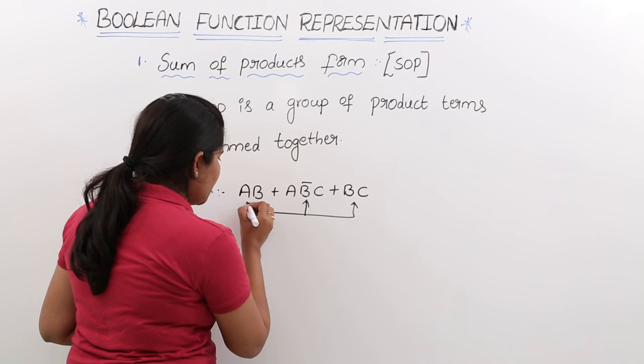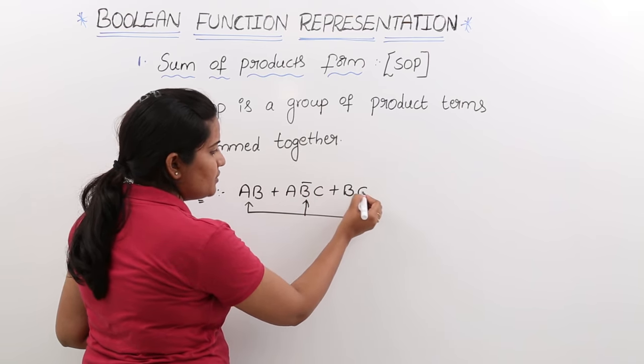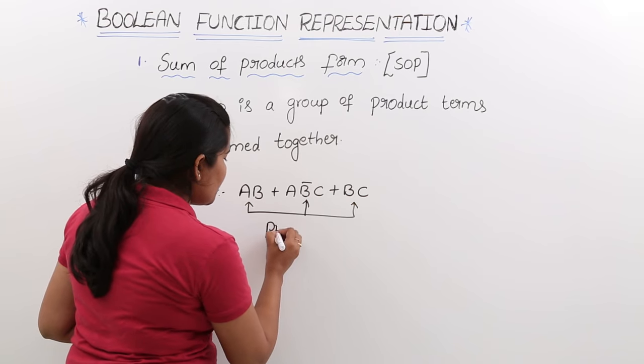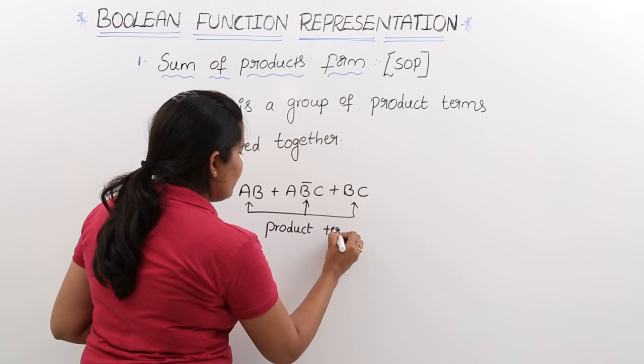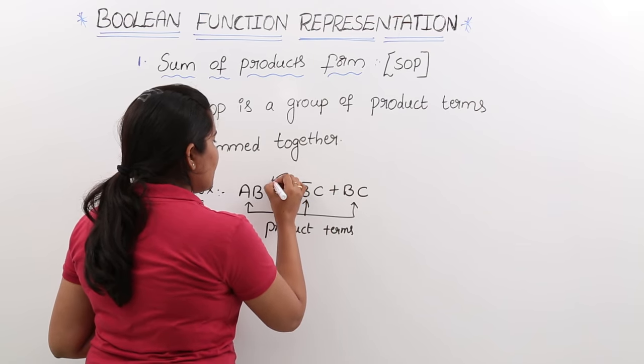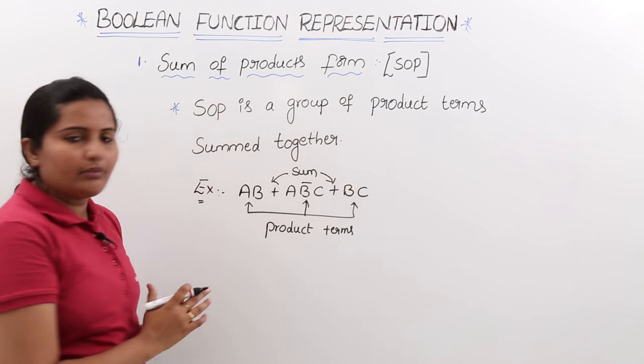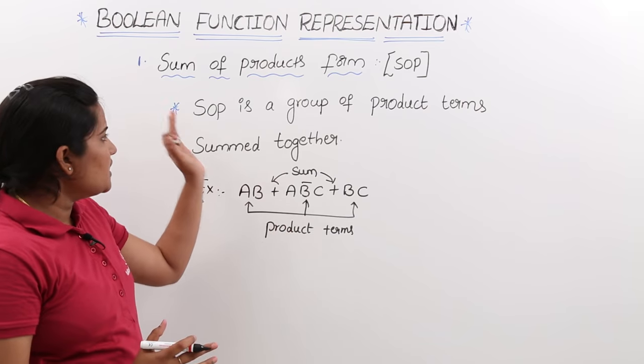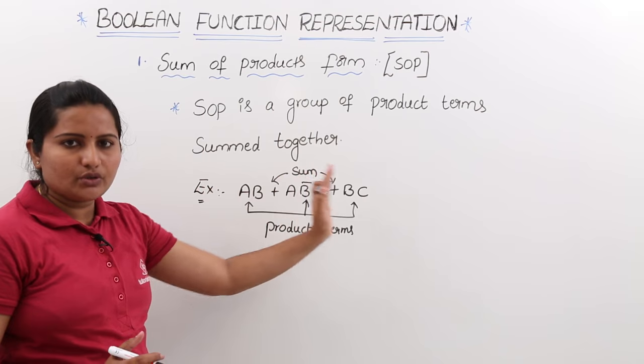These are called product terms: A into B, A into B bar into C, B into C—all these are product terms. Whereas here, these product terms are added together. This is nothing but sum. This is the meaning for this definition: SOP is a group of product terms summed together.